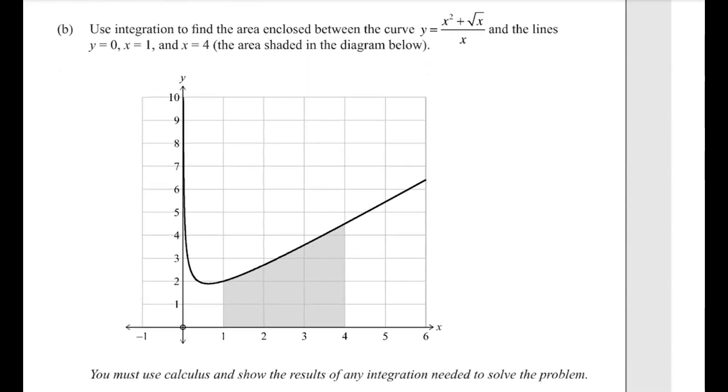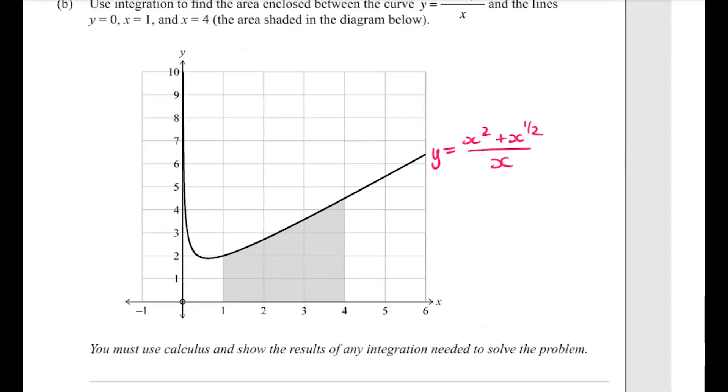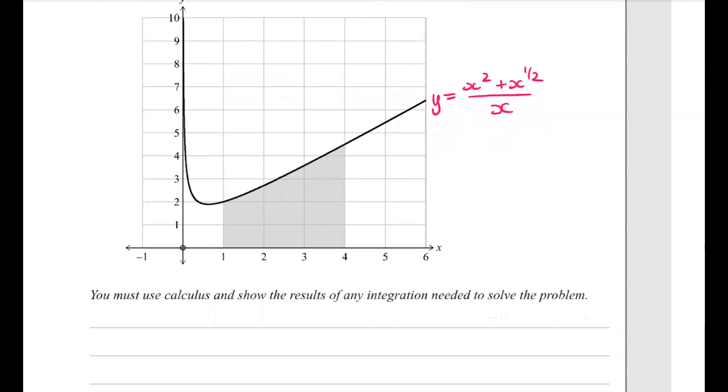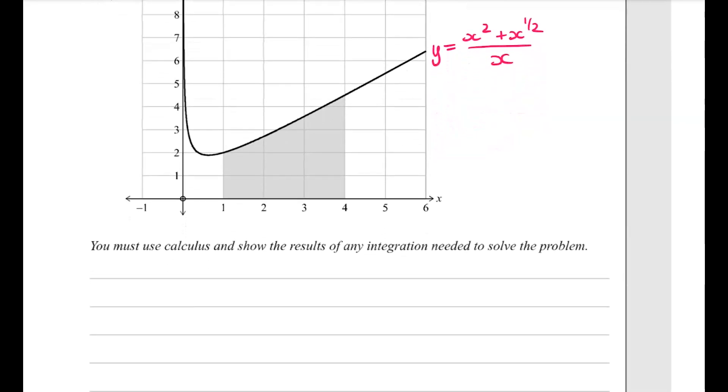For part b, we've got a graph that we're given here. And we need to find the shaded area on this graph. So we need to integrate that function between 1 and 4.